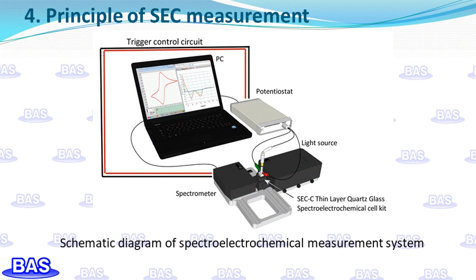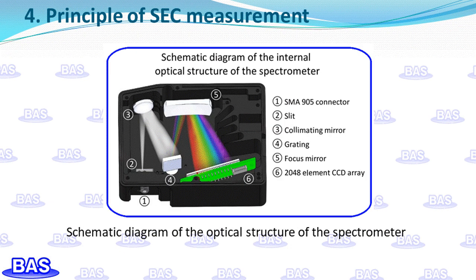It is recommended to use a small spectrometer with a CCD array detector. In such a spectrometer, light is irradiated onto a collimator lens through a slit, refracted into parallel light, and irradiated onto a grating. There the light is dispersed into a monochromatic spectrum and projected onto a CCD array via a focusing lens for detection. This type of spectrometer performs spectral measurement control through computer-controlled software and has a trigger control function, allowing external control through potentiostat software to achieve synchronized detection with electrochemical reactions.